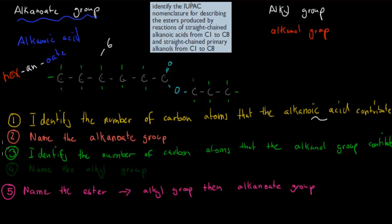Now we're going to name the part which comes from the alkanol group. So third step, identify the number of carbon atoms that the alkanol group contribute. In this case, it's 1, 2, 3, these three. This here is our alkanol, they have three carbons. And that makes it a prop, prop for three.